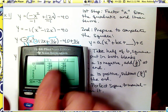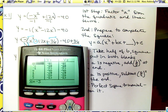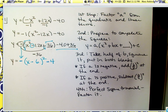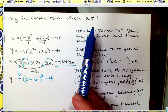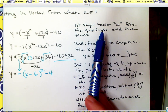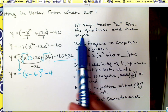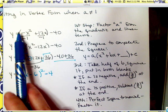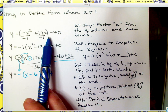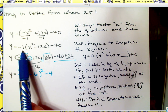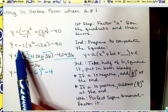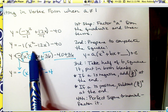As you can see, y1 and y2 are equivalent. Just to recap: the very first thing we do if our a value is not equal to positive 1 is to factor a from the quadratic and linear terms — parentheses go around your quadratic and linear terms, and you factor that out. Remember, you're not looking for a GCF; you're looking to factor out the a.